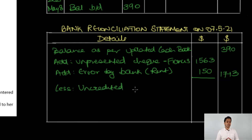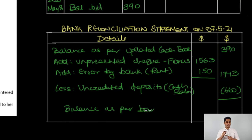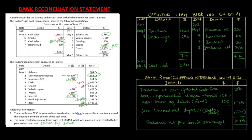We then deduct our uncredited deposits, which is cash sales of $660. Starting with the updated cash book balance of $390, adding $1,713, and deducting $660, we arrive at the balance as per our bank statement of $1,443. When the balance from the reconciliation statement matches the actual bank statement balance, we can confirm that all errors and transactions causing differences between the balances have been considered and accounted for.